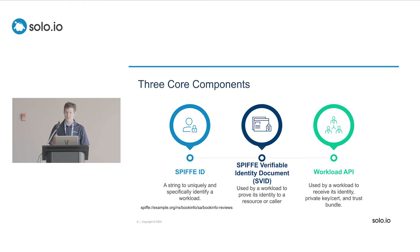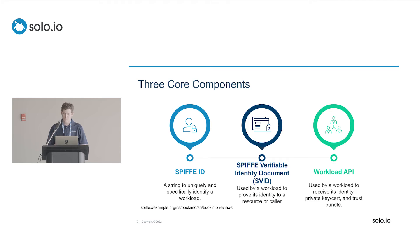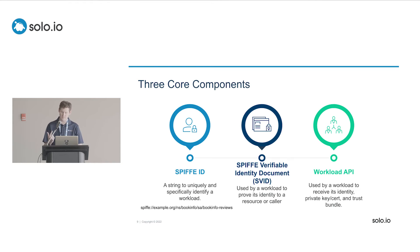Finally, the Workload API itself — the API which a given workload calls to get all of the information it needs to participate in the system. The Workload API is usually exposed locally, commonly over a Linux socket. Interestingly, you don't need any authentication to call it — the workload doesn't need to know anything about itself; it just says 'tell me who I am.' What it gets back is a SPIFFE ID, an SVID — the cryptographically verifiable document to present to other workloads — and a trust bundle it can use to verify other callers when they present their SVIDs.